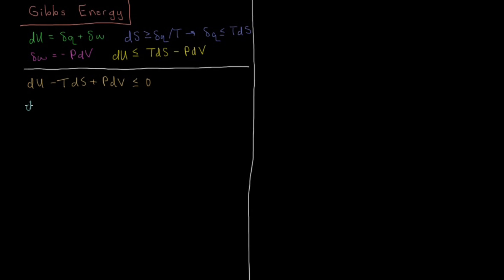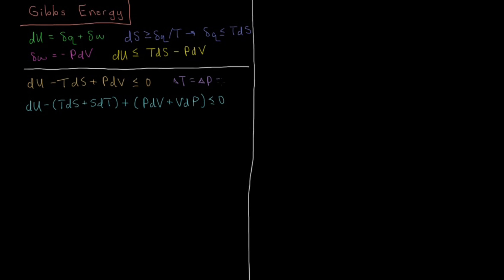Just as in the previous video, I'm going to start adding in some terms here which are just going to end up canceling. So we have dU minus TdS, then I add plus SdT, then plus PdV, and then plus VdP, and that's less than or equal to zero. But remember, we enforce the criteria that ΔT and ΔP are zero — constant pressure and temperature — so dT is zero and dP is zero. That means SdT will be zero and VdP will be zero, so this expression is still the same as before.